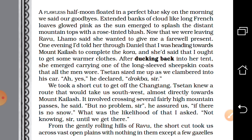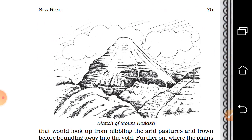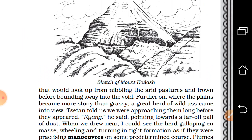From the gently rolling hills of Ravu, the shortcut took them across a vast open plain — a plain area with nothing in it except a few gazelles, which are African or Asian deer. The gazelles would look up from nibbling the arid pasture — eating the grasses — and frown before bounding away into the void — empty places — on seeing people.